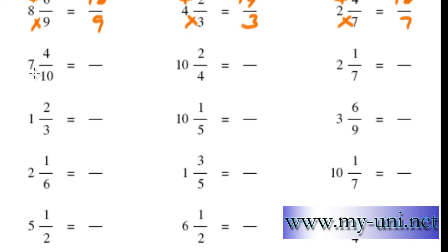10 times 7 is 70. 70 plus 4 is 74 over 10. 10 times 4 is 40. 40 plus 2 is 42.